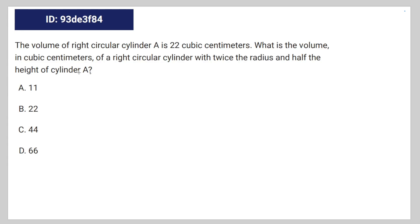Okay, so the volume of a right circular cylinder A is 22 cubic centimeters. What is the volume in cubic centimeters of a right circular cylinder with twice the radius and half the height of cylinder A?